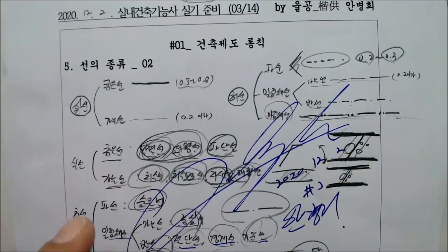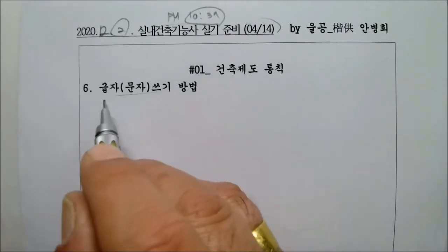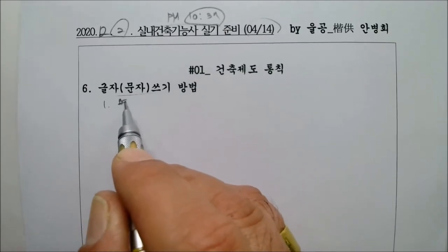실선, 굵은선, 가는선, 파선이 있는 건 뭔지 다 공부했습니다. 이번 시간에는 글자, 문자쓰기 방법입니다. 첫번째, 조건을 볼까요? 무조건 또박또박 명확하게 했습니다.